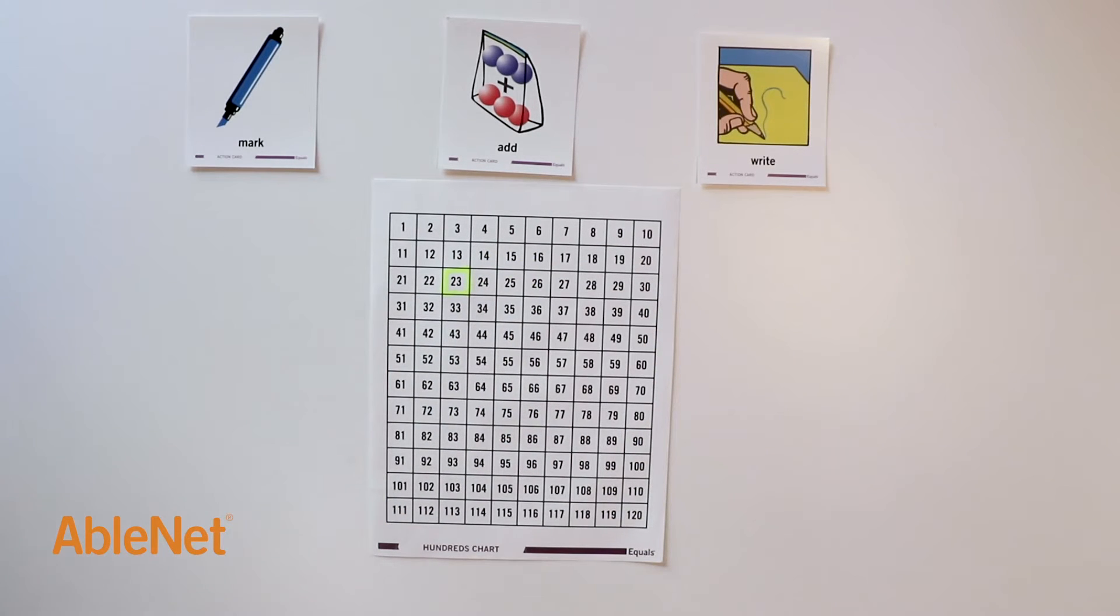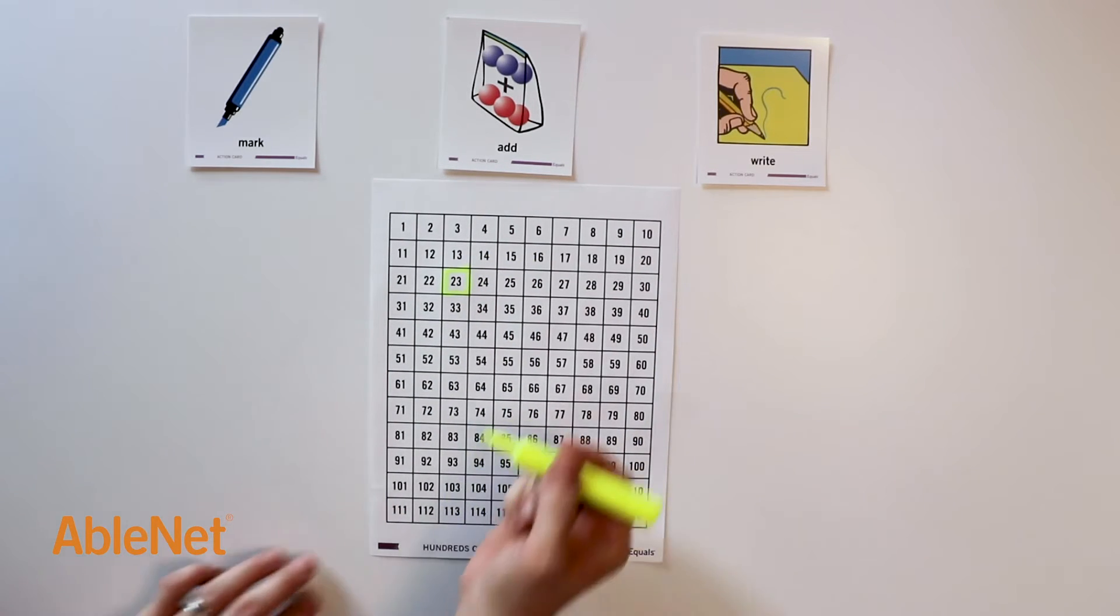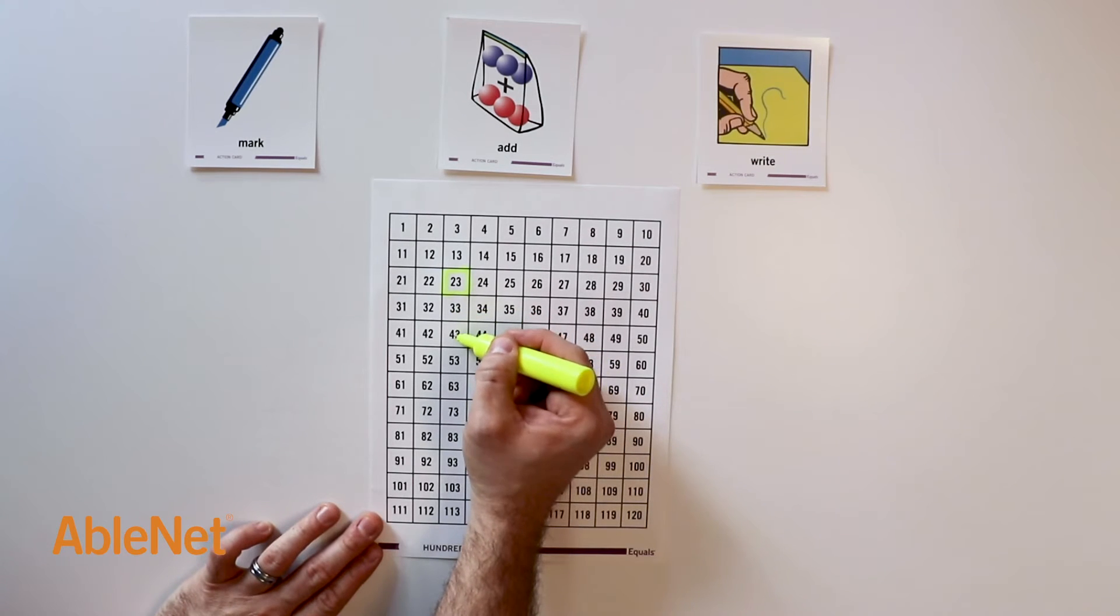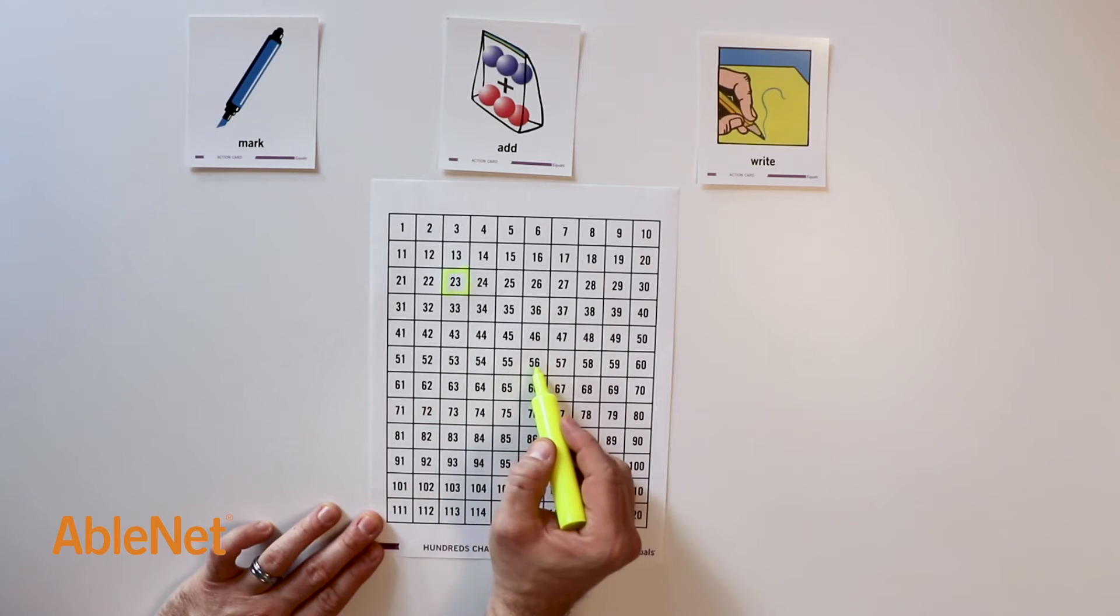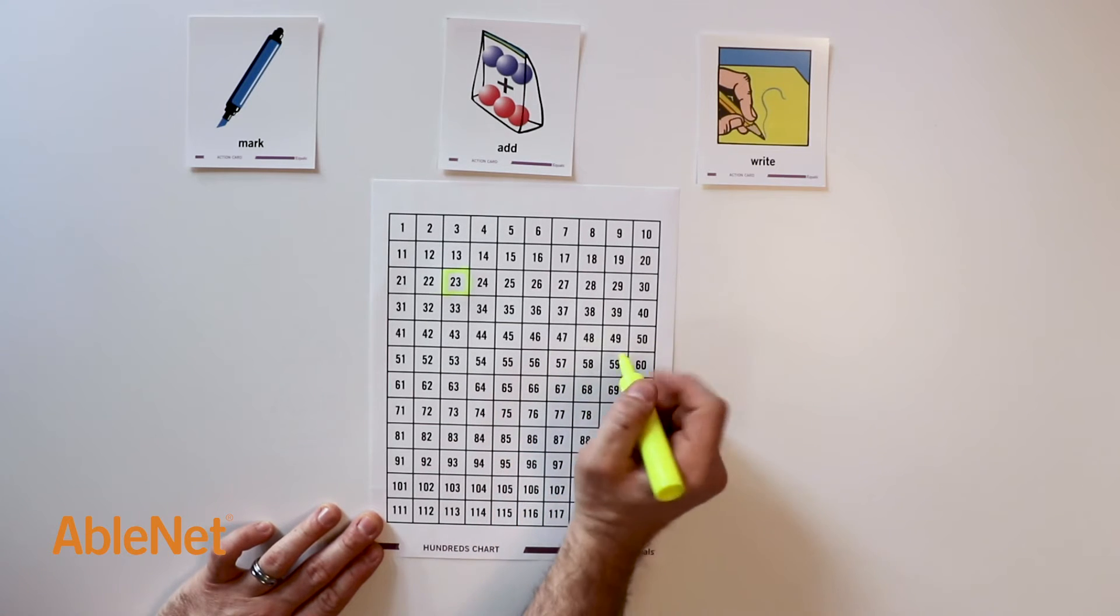Next, I will count to add the second amount of 36. 10, 20, 30, 31, 32, 33, 34, 35, 36.